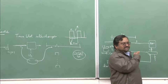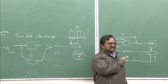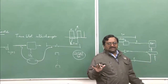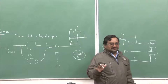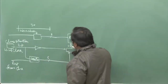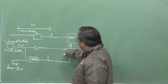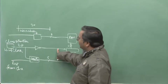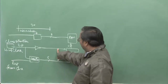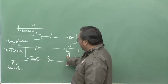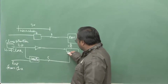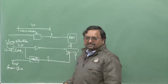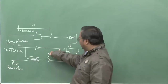Once you understand the basic concept, you can start designing almost all kinds of things. When the clock is 1, I have to put this address; when it is 0, I select the other. The control entity governs which address source is selected.